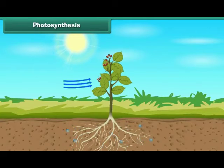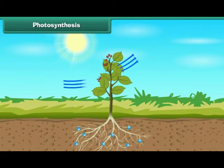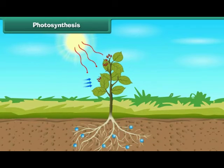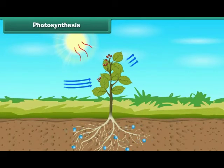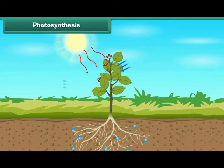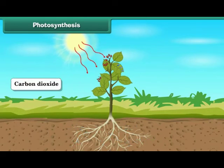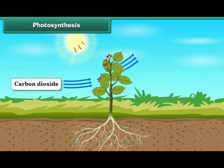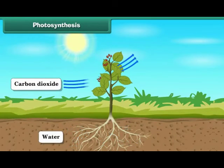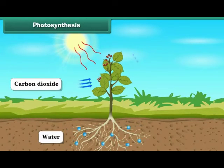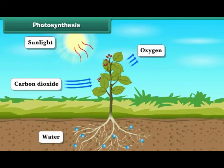Plants make food in their leaves by means of a process called photosynthesis. Leaves of a plant prepare food by converting the carbon dioxide absorbed from air and water absorbed from soil into glucose in the presence of sunlight. Oxygen is released during photosynthesis.